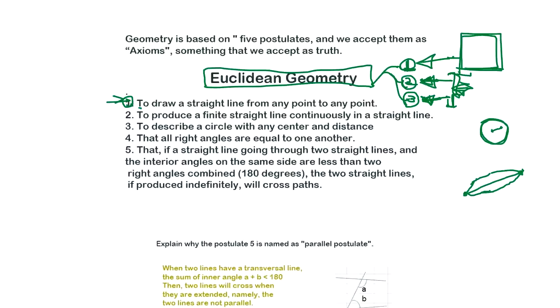To draw a straight line from any point to any point, to produce a finite straight line continuously in a straight line. So you can extend this straight line at any length you want. And third is to describe a circle with any center and a distance. You can describe a circle with a center and a distance. Actually, the circle definition you learned in middle school is the collection of points which has an equal distance r from the center point.